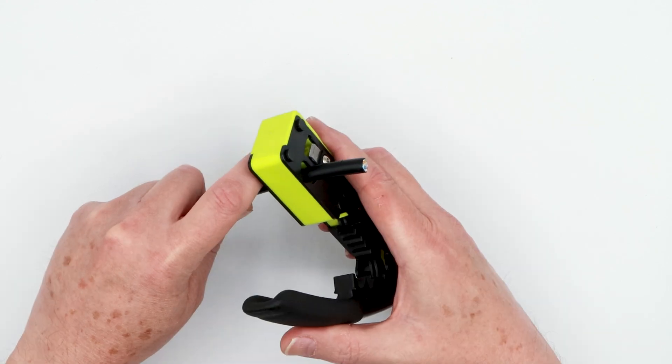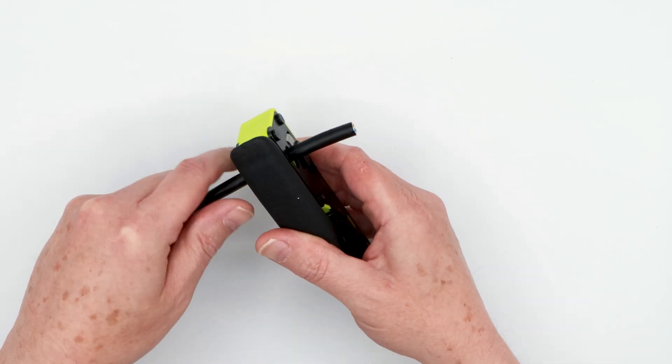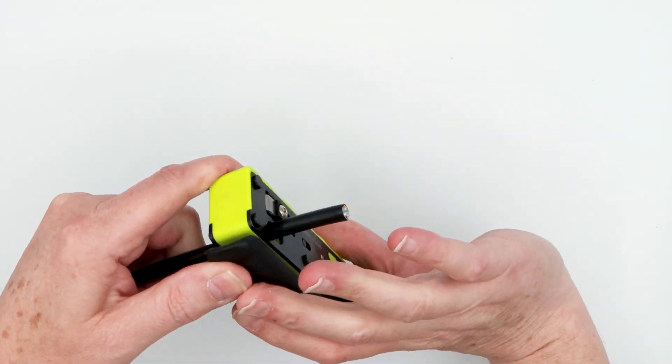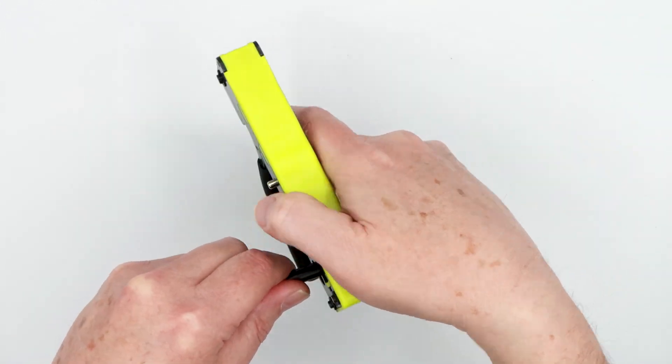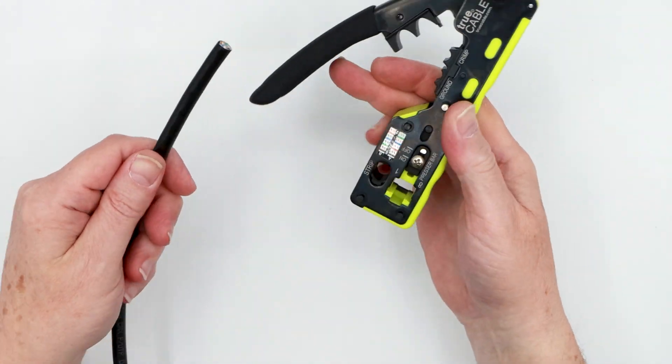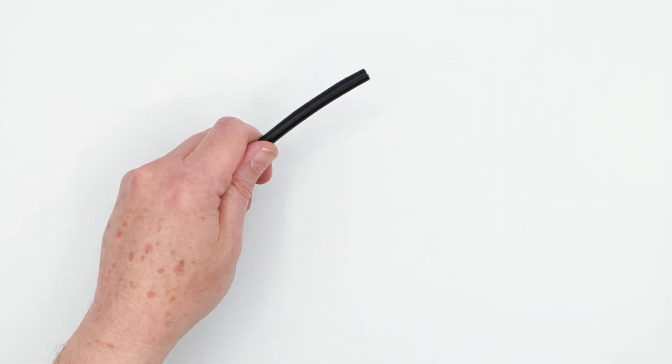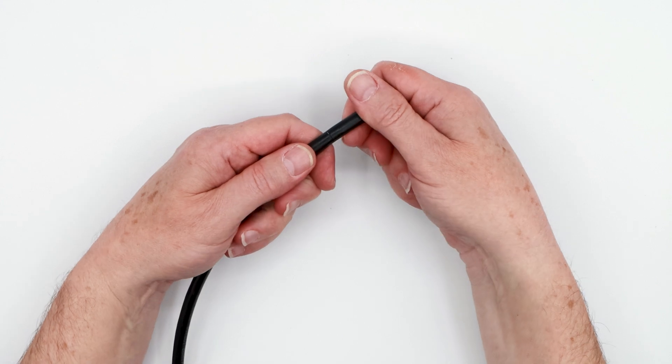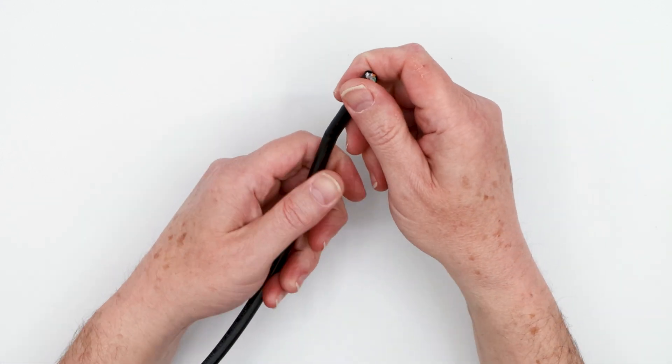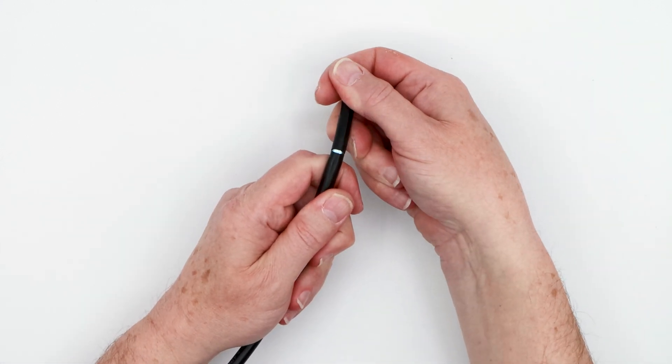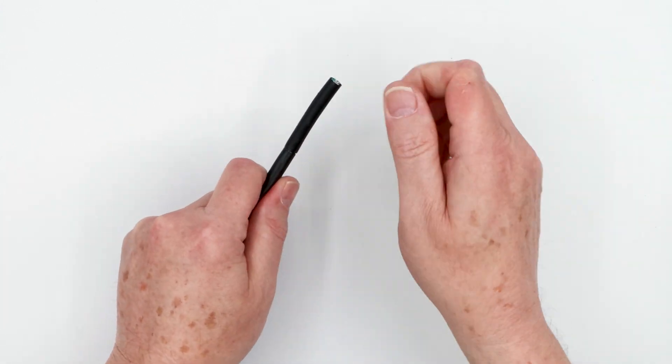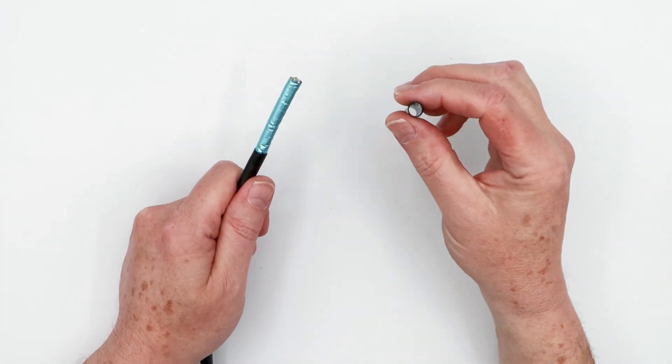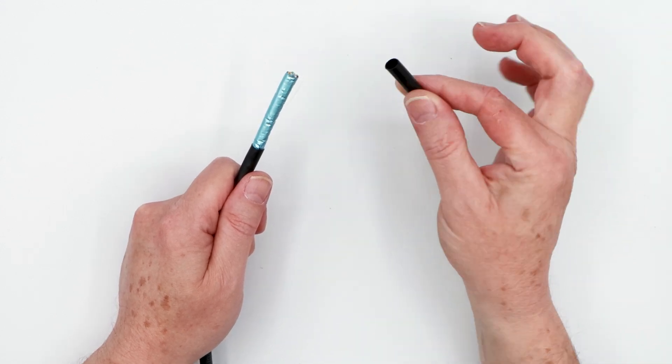So the first step put about inch and a half to two inches through there close the tool all the way make one turn around like so open up the handle all the way and carefully remove the cable. Once you've got a nice score on this cable jacket it's a simple matter of breaking it at the score and it should separate just like that. Usually it's only two that you need to do pull that jacket off and you're going to want to keep this jacket because we're going to use it to untwist conductor pairs.